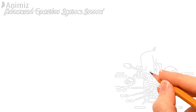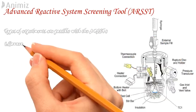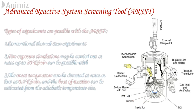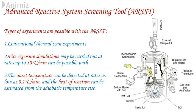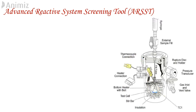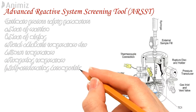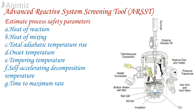Various types of experiments are possible with ARSST, such as conventional thermal scan experiments. Fire exposure simulation may be carried out at a rate up to 30°C per minute. The onset temperature can be detected at a rate as low as 0.1°C per minute, and heat of reaction can be estimated from the adiabatic temperature rise. ARSST is used for calculation of heat of reaction and vent sizing. It is better equipped to handle mixtures and capture data while adding a reagent at process temperature. The phi factor is very low — approximately 1.04 — making data directly usable for scale-up.